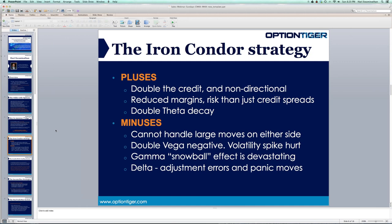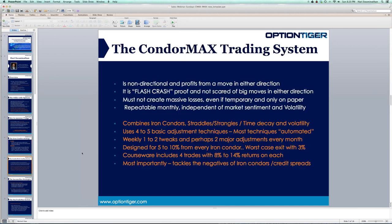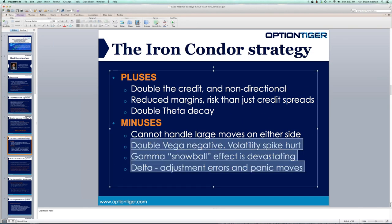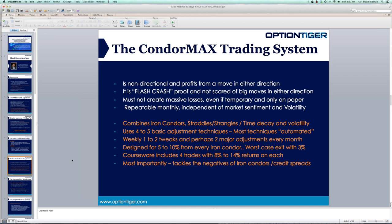Therefore, it's very important to approach trading with the mindset that we need an edge. The iron condor is one of my favorite strategies — I've been trading it for five, six, seven years. When I started thinking about it, I realized we have to find a way to neutralize the negatives. If you can't neutralize those negative aspects, then you don't have a method or a system. That's how the Condor Max system was born.